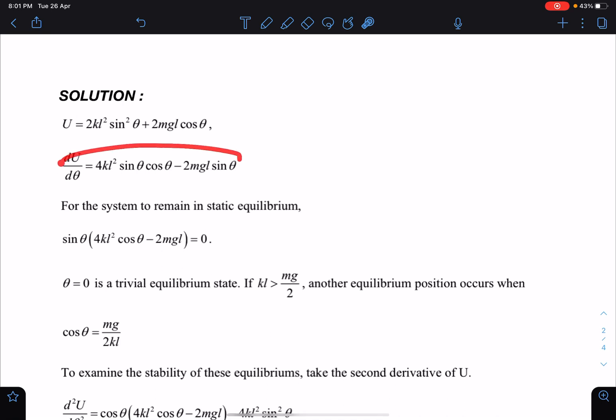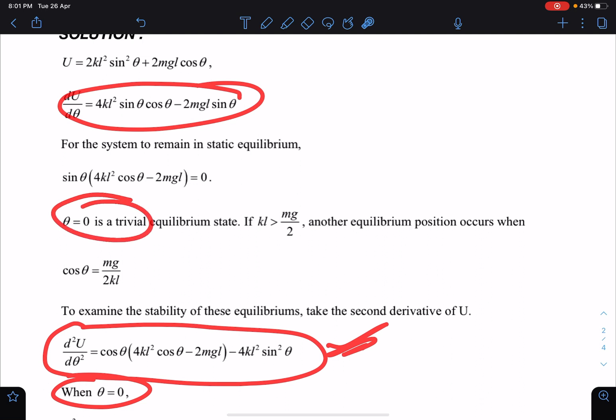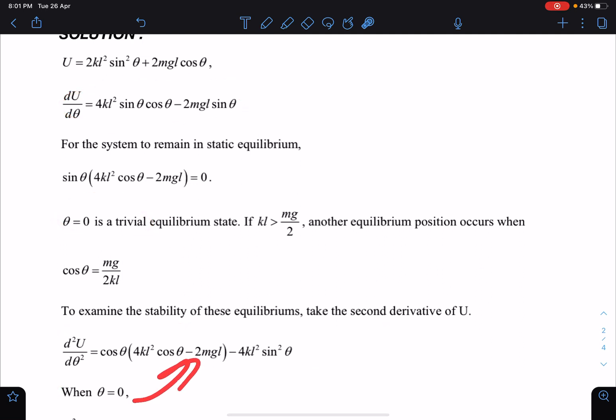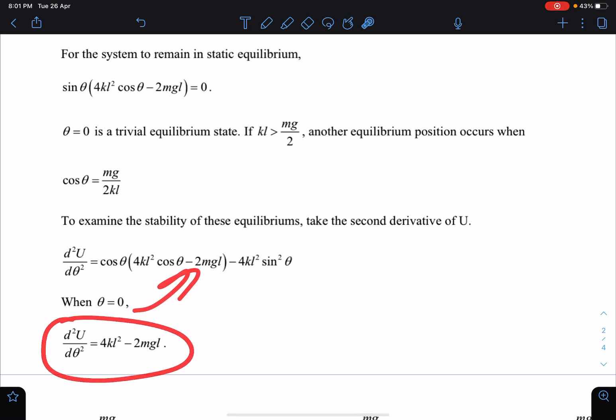So that depends on the value of k. Now here, this U theta, one more time I will differentiate this, so I am getting this function. Now you can check by putting theta equal to 0. The one solution was theta equal to 0. When I substitute this here, I am getting d²U/dθ² is equal to 4kl² minus 2mg l.